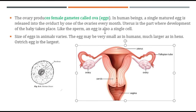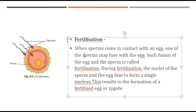Just like the sperm, the egg is also a single cell. The size of eggs in animals varies — the egg may be very small as in humans, much larger as in hens, and the ostrich egg is the largest. So the eggs of humans are very small, the eggs of hens are much larger, and the ostrich egg is the largest of all.